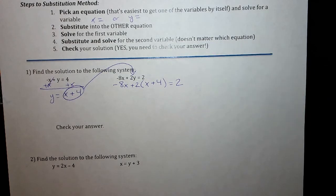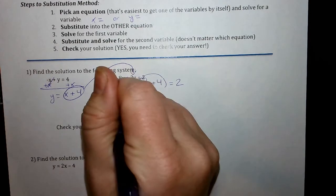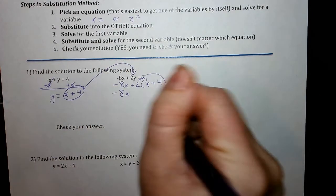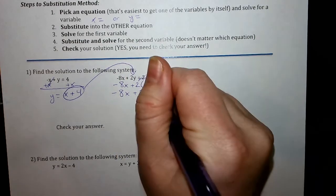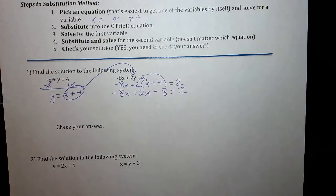So I have to distribute in. So I get negative 8x, I didn't do anything with that, plus 2x plus 2 times 4 is 8 and it equals 2.